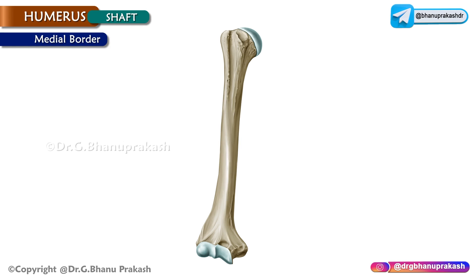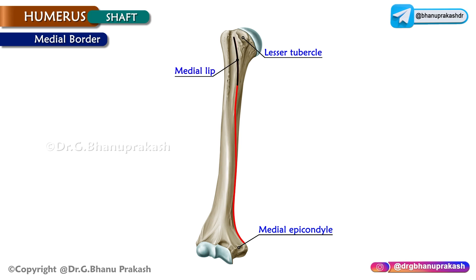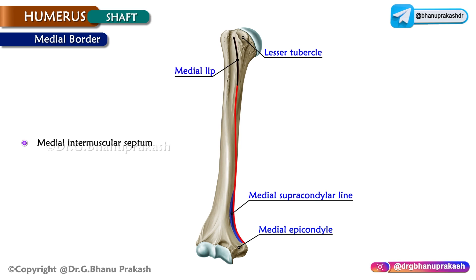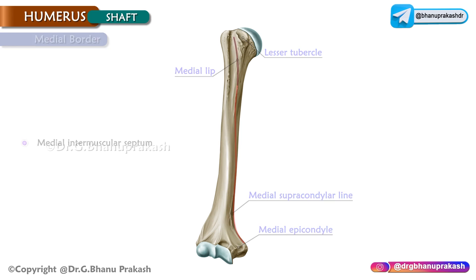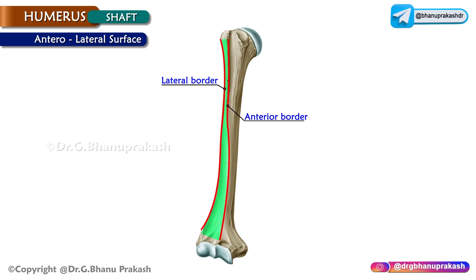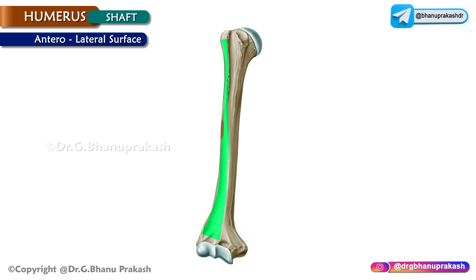The medial border extends from the lesser tubercle to the medial epicondyle. It forms the medial lip of the intertubercular sulcus and becomes prominent to form the medial supracondylar line, which gives attachment to the medial intermuscular septum. The anterolateral surface lies between the anterior and lateral borders and presents a rough tubercle at the middle called the deltoid tuberosity.